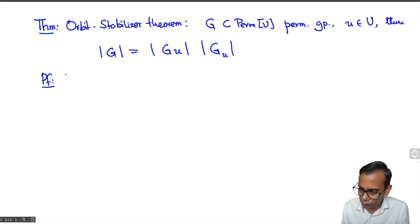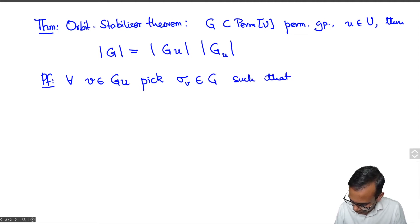So what you do is for every V in the orbit of U, you pick an element sigma V in G such that, well V is in the orbit of U so there exists an element sigma V such that sigma V of U is equal to V. And now define a function